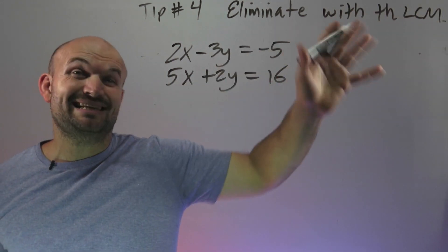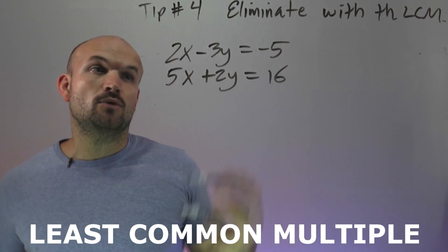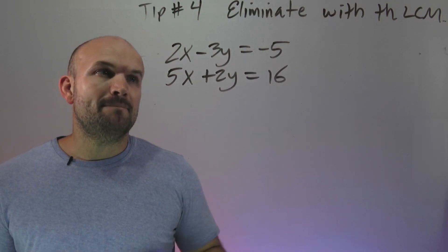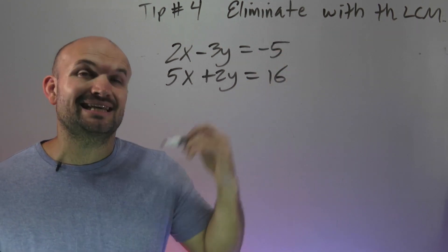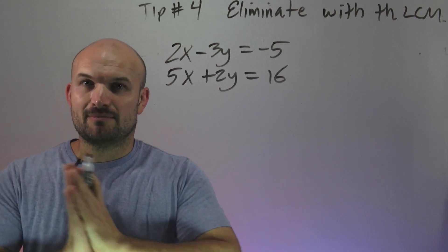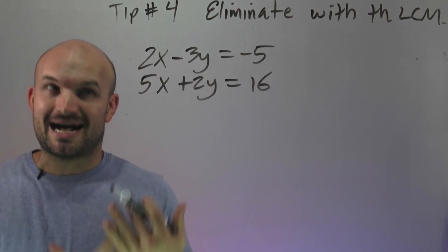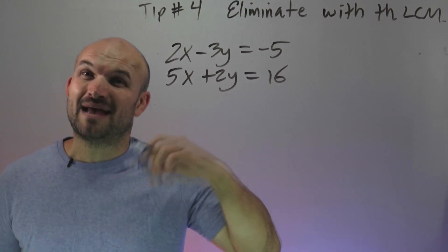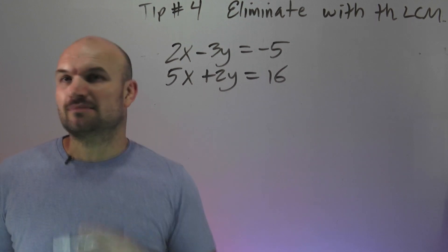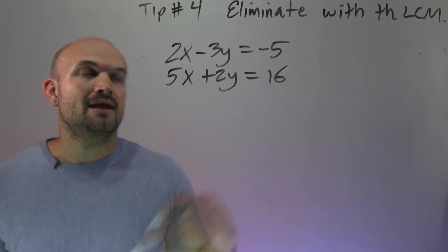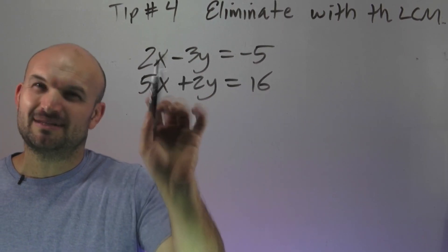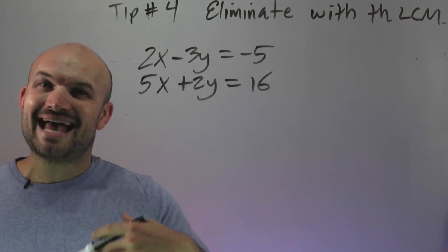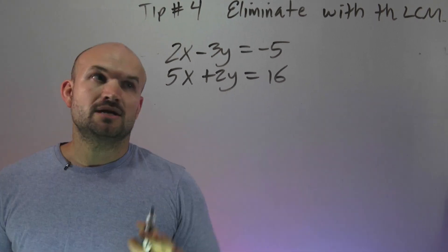Tip number 4 says to eliminate with the LCM — the least common multiple. We can eliminate either x or y, meaning get a coefficient to be 0. We use the least common multiple of the coefficients, treating them all as positive. The LCM between 2 and 5 for x is 10, and the LCM between 3 and 2 for y is 6. Since 6 is smaller than 10, I'm going to decide to eliminate variable y. We want to get our y coefficients to be exactly the same absolute value, so the LCM is 6.